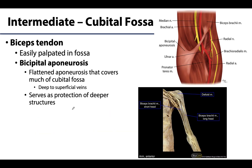Moving to the intermediate portion of the cubital fossa: this is majorly composed of the biceps brachii tendon. This tendon can be easily palpated as it descends distally on its way to attach to the radial tuberosity of the radius.